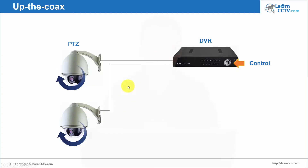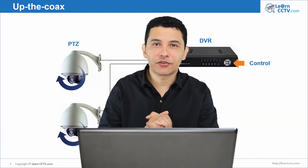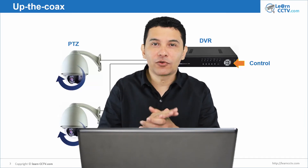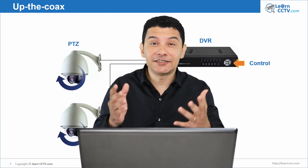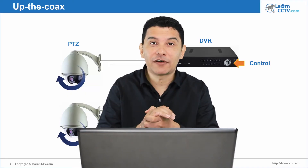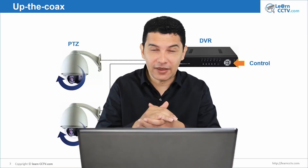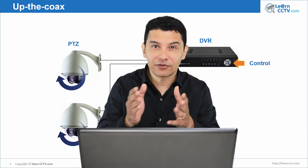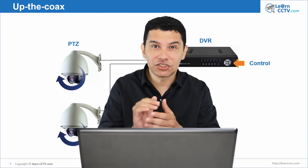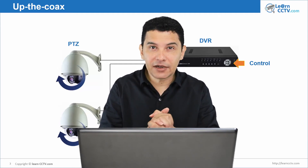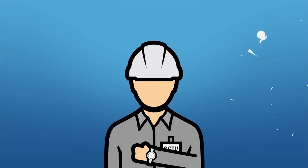Here I also have a video from Clinton Electronics, a camera manufacturer. They have coaxial control where you can also control the menu of your camera — it's not just PTZ. Suppose you have a box camera and you want to control its menu remotely; you can use the cable to send control commands and adjust the camera. Let's see the example video.